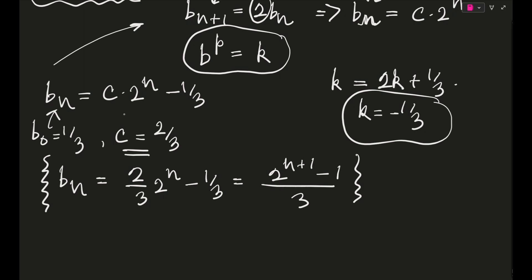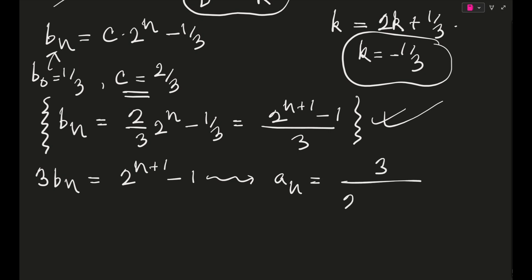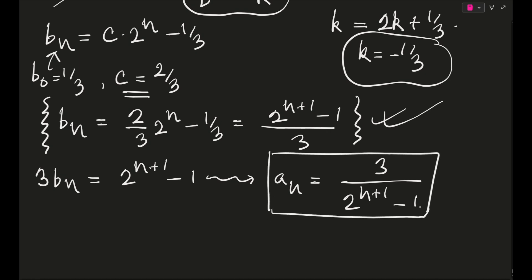Moving forward: we had found 3bₙ = 2ⁿ⁺¹ − 1, so bₙ = (2ⁿ⁺¹ − 1)/3. Since bₙ = 1/aₙ, we get aₙ = 3 / (2ⁿ⁺¹ − 1). That is our expression for aₙ.